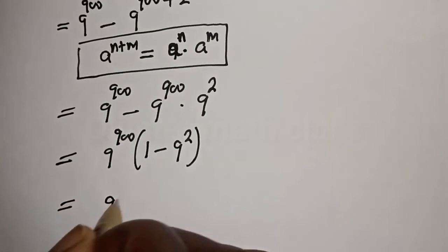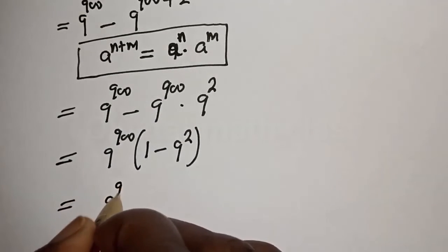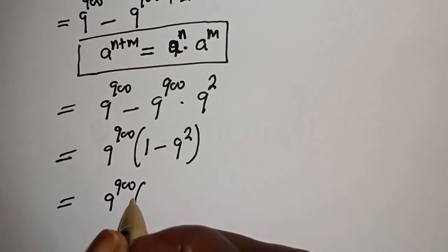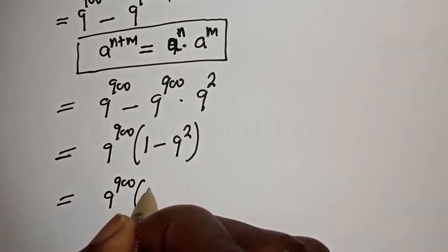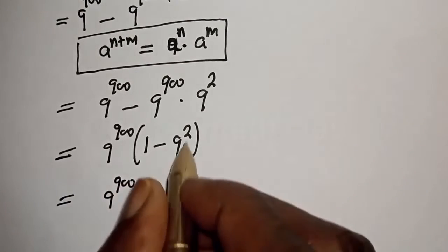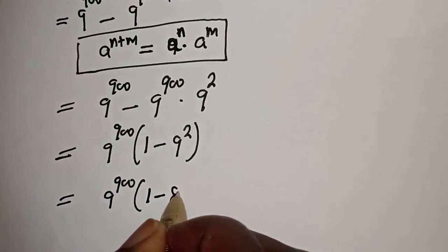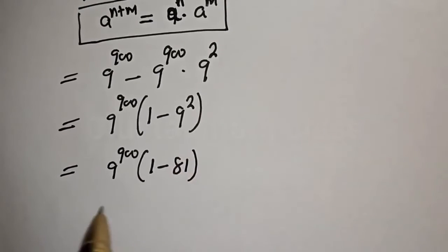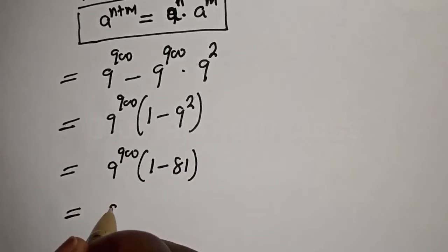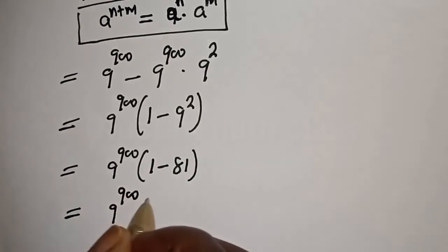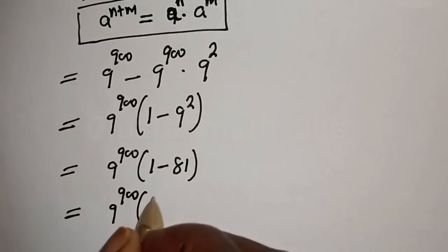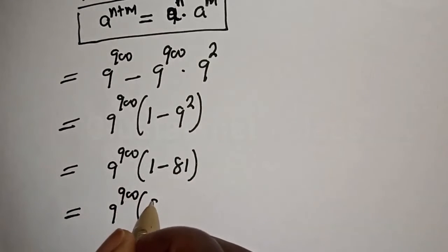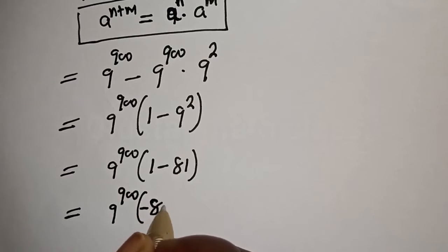We have 9 raised to power 900 times the bracket 1 minus 9 squared. Since 9 squared is 81, this becomes 9 raised to power 900 times bracket 1 minus 81, which equals 9 raised to power 900 times negative 80.